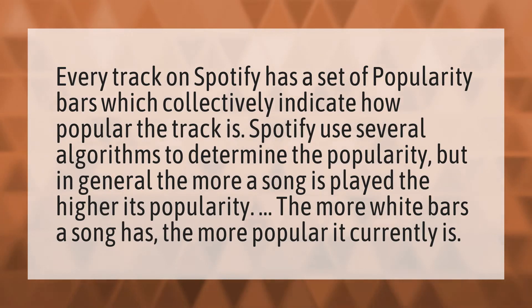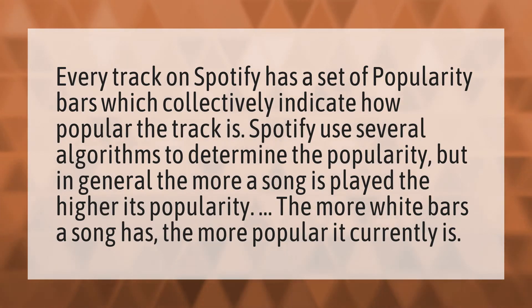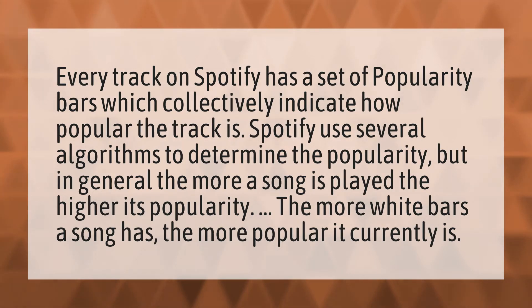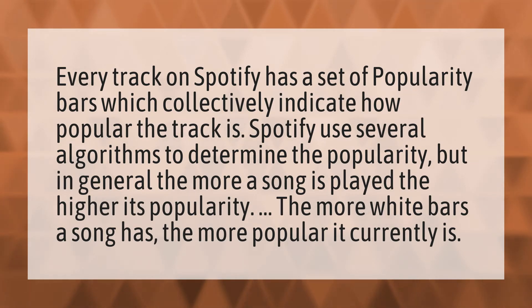Every track on Spotify has a set of popularity bars which collectively indicate how popular the track is. Spotify uses several algorithms to determine the popularity, but in general the more a song is played the higher its popularity. The more white bars a song has, the more popular it currently is.